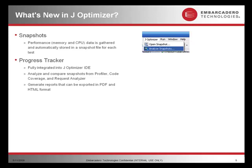The progress tracker, which is fully integrated into the J-Optimizer IDE, allows you to analyze and compare snapshots from profiler, code coverage, and request analyzer, and also generate reports that can be exported to PDF or HTML format.